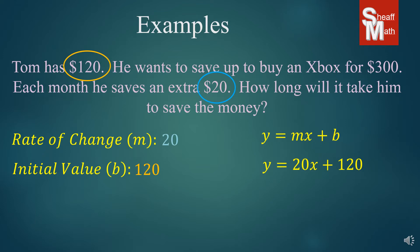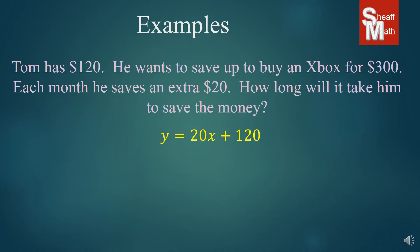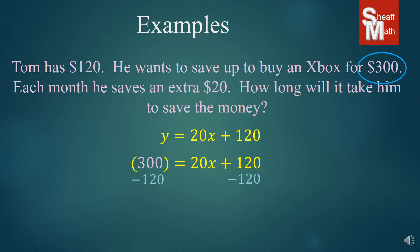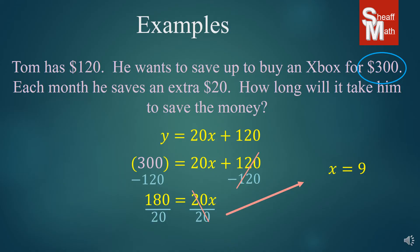20 times the months plus 120 initial value equals y, the total we're looking for. We're going to use this to solve the word problem. The question asks how long will it take him to save the money. We know the total is $300, so we put 300 in for y and solve for x. We subtract 120 from both sides, giving us 180 equals 20x. We divide by 20 on both sides, and that comes out to x equals 9. So it will take nine months for him to save the money.